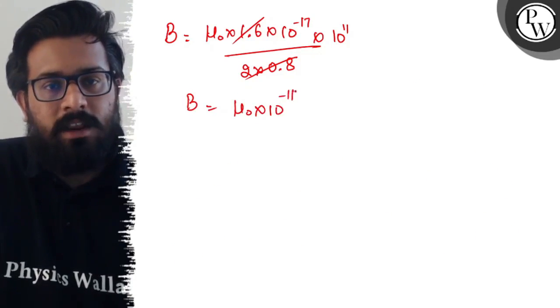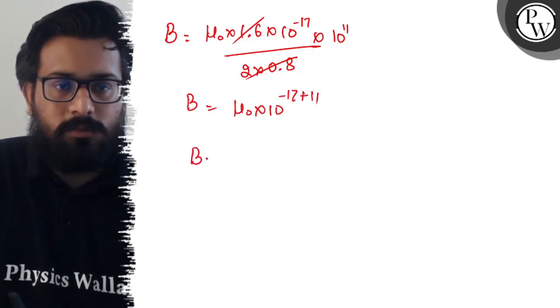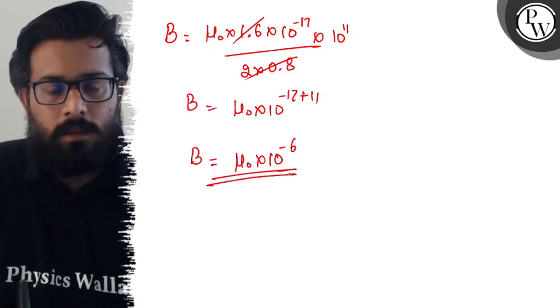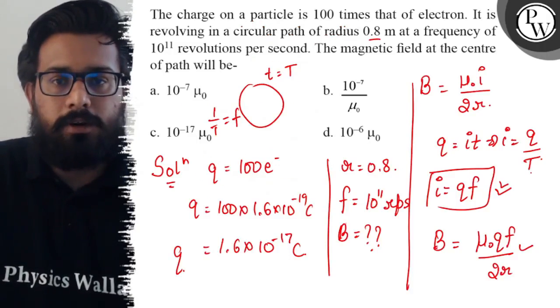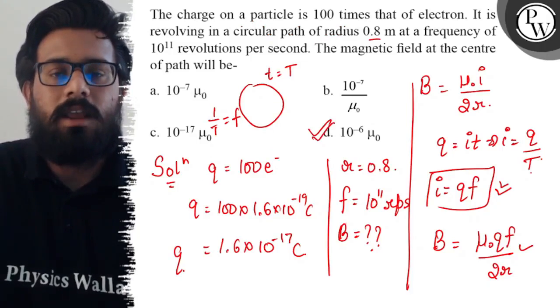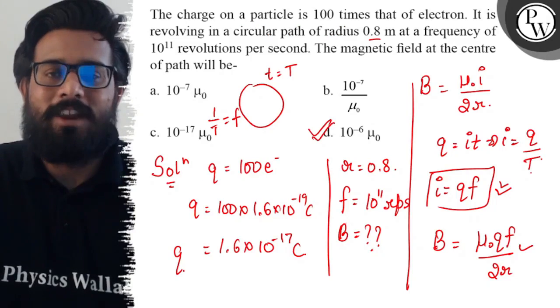Into 10^-6. So this is your final answer: μ₀ × 10^-6. So your option D is absolutely correct. I hope you got the concept of this question. All the very best.